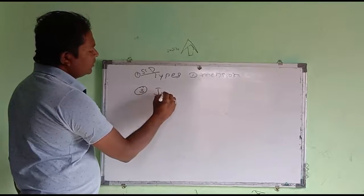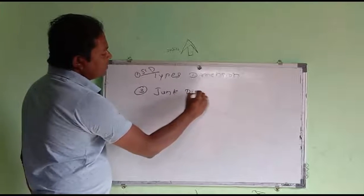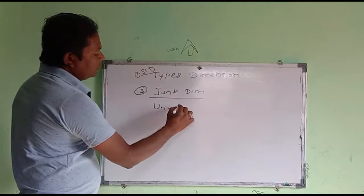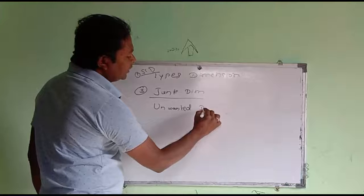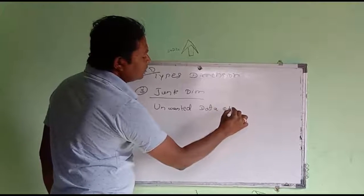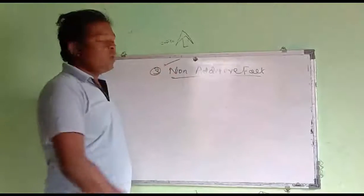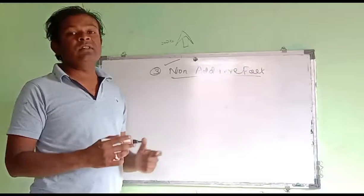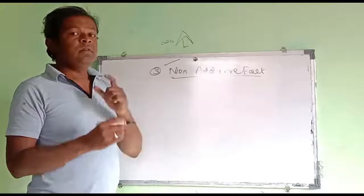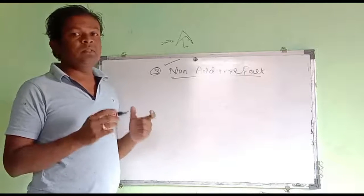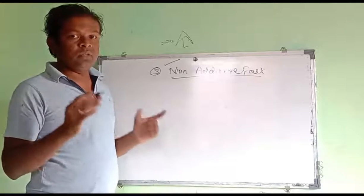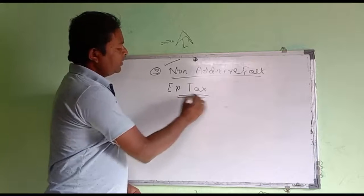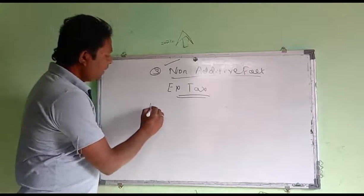The third type is Junk Dimension, which contains unwanted data attributes. Now, a non-additive fact table is one where the fact value is generated without considering any of the dimension tables. An example of a non-additive fact value is tax.